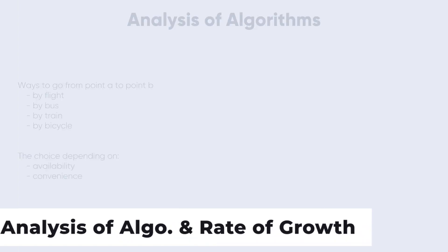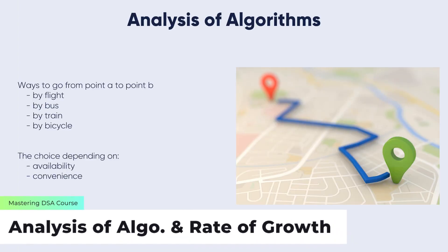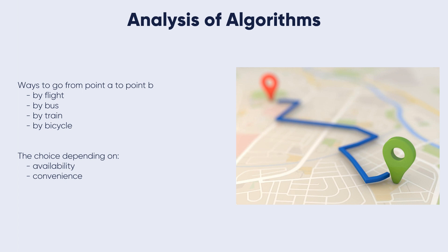Analysis of algorithms. To go from point A to point B, from city A to city B, there are many ways for accomplishing this — either by flight, by bus, by train, by bicycle, or others. Depending on the availability and convenience, we choose the one that suits us.